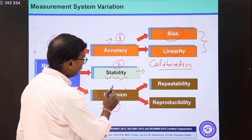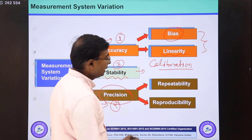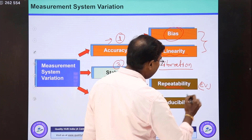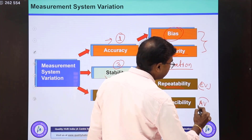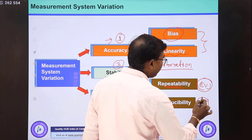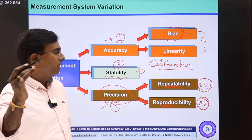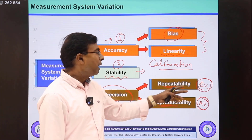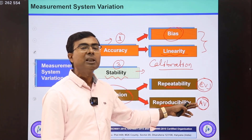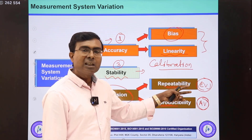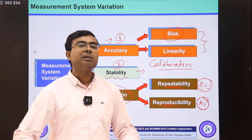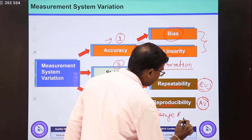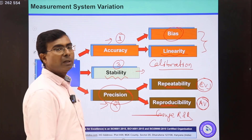The next element is precision. For the study of precision we have two components: the first one is repeatability, which is also called equipment variation, and the second one is reproducibility, which is also called appraiser variation. Equipment means the gauge, and appraiser means the person who is inspecting — the inspector. In a broader sense, precision is the study of how my equipment and my appraisers or inspectors are behaving — whether the variation present because of equipment and appraisers is within the acceptable limit or not. For that, we study Gauge R&R — Gauge Repeatability and Reproducibility.